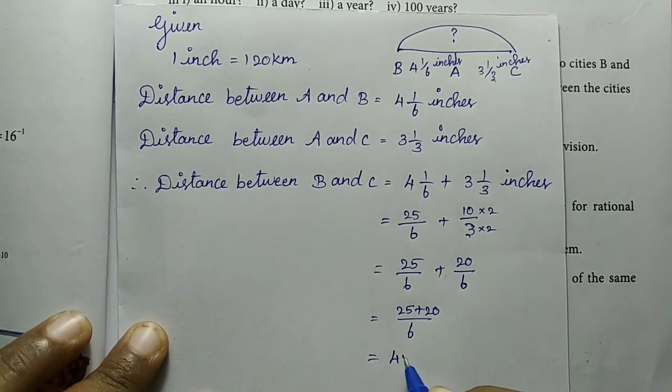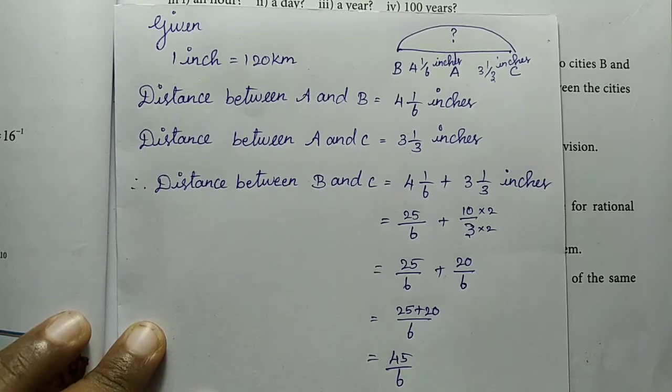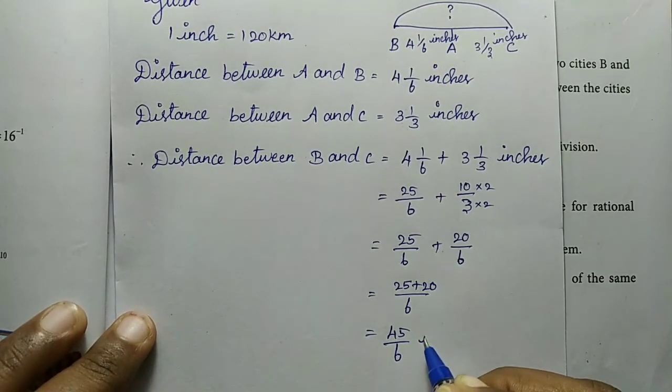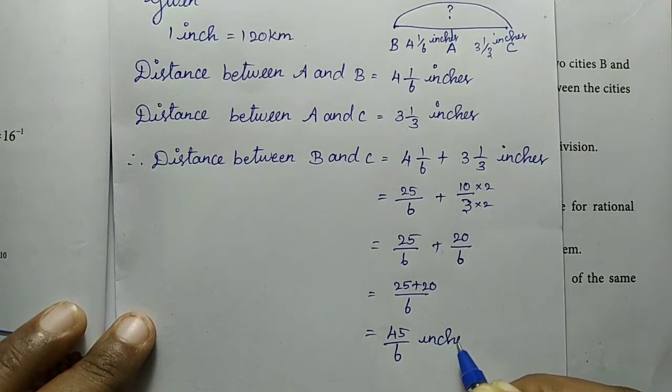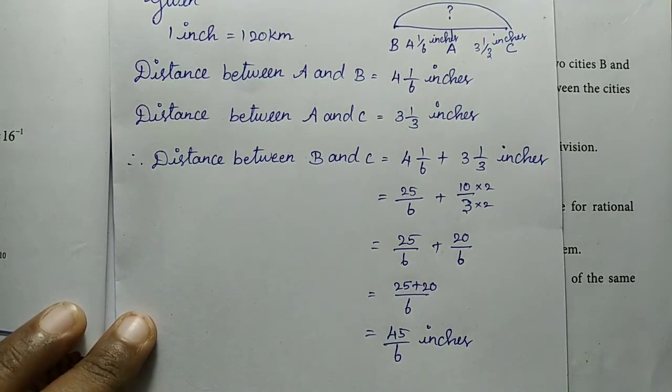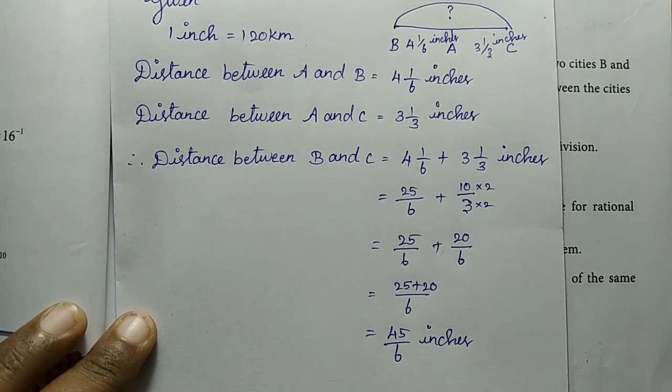Now the denominators are the same, so we add the numerators: 25 plus 20 equals 45. So the answer is 45 divided by 6 inches. Now we need to find the actual distance between the map and actual distance.